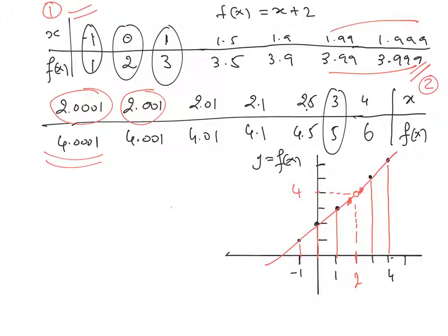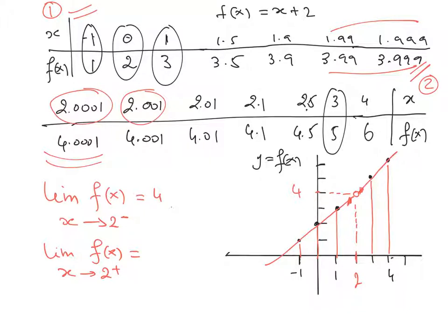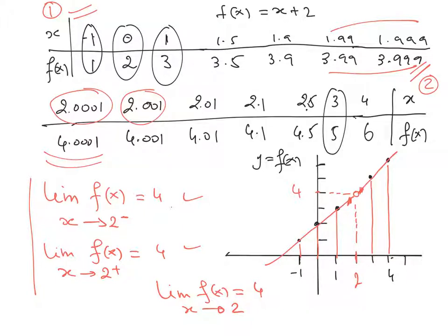We now introduce the concept of limit and write that the limit of f(x) as x approaches 2 from values smaller than 2 equals 4. The limit of f(x) as x approaches 2 from values larger than 2 also equals 4. Because the two one-sided limits are equal, the limit as x approaches 2 equals 4. Although the function is undefined at x = 2, the limit exists and equals 4.